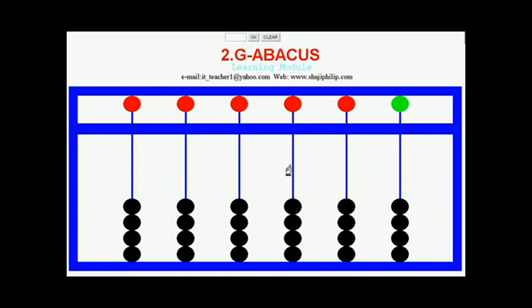The value increases from left to right. The rods represent units, tens, hundreds, thousands, and so on. In the units rod, each earth bead has a value of one. In the tens rod, each earth bead has a value of ten when set.